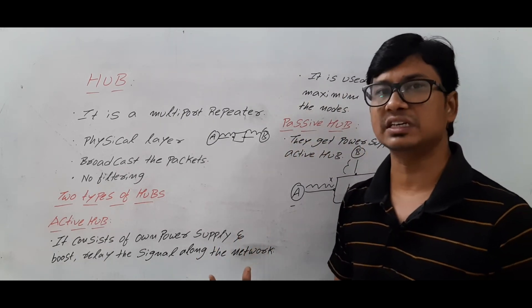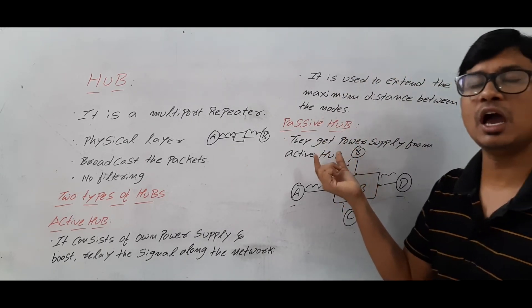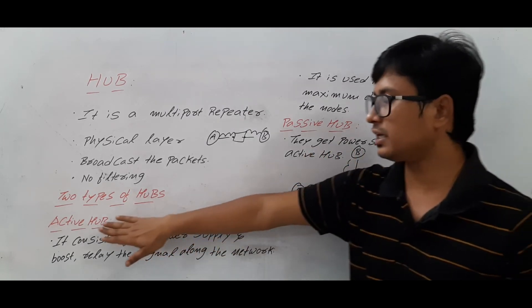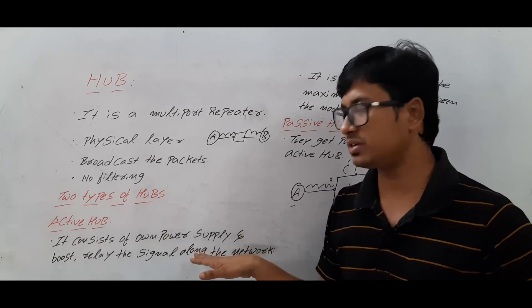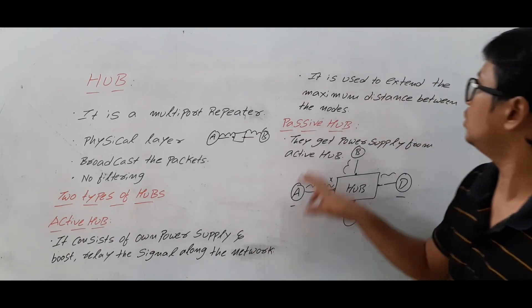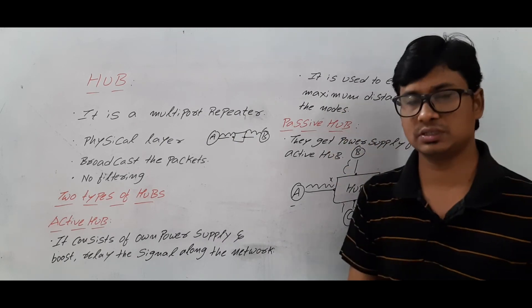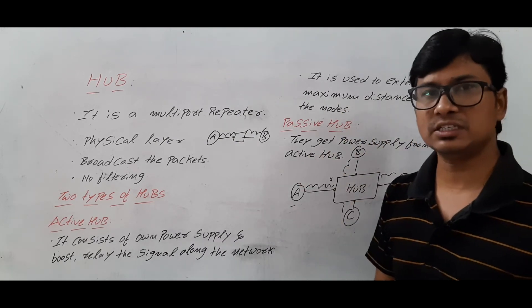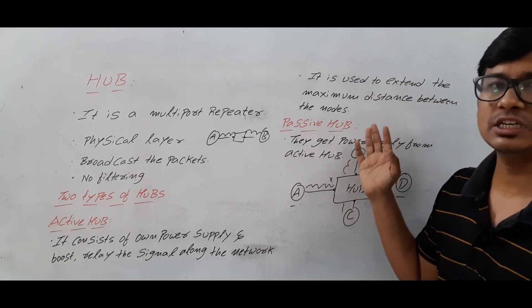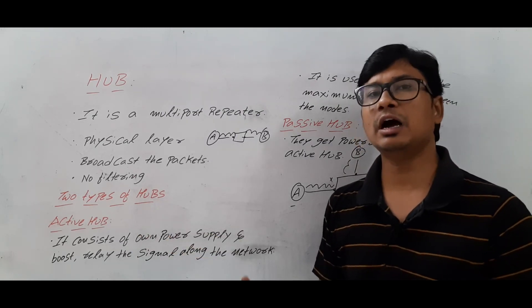The passive hub does not have its own power supply — it gets the power supply from the active hub. The active hub consists of its own power supply and can relay the signal along the network. It is used to extend the maximum distance between nodes. The passive hub is not used for extending the distance between nodes.